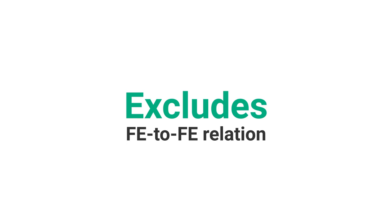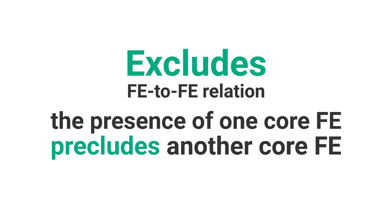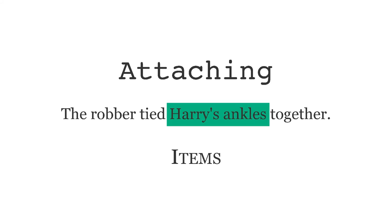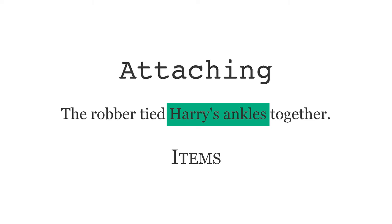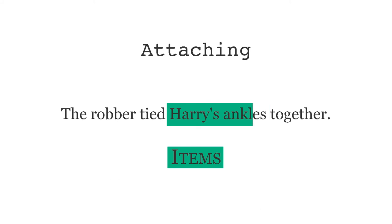Excludes is another frame element-to-frame element relation. It happens if the presence of one core frame element precludes another frame element from appearing. Let's use the attaching frame again. In the sentence, the robber tied Harry's ankles together, the items frame element is present. Note that the ankles are tied together, which results in mutual attachment. Because of that, if the items frame element occurs, then the item and goal frame elements are excluded. So we say that items excludes item and goal.